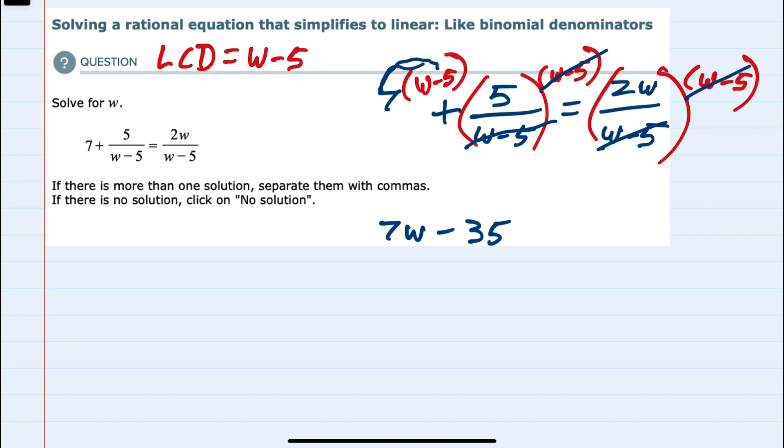Since the w minus 5 is canceled in the next term, I'm left with just the plus 5. And then on the right-hand side of the equation, since the w minus 5 is canceled, we have just 2w.